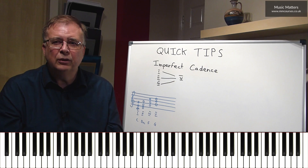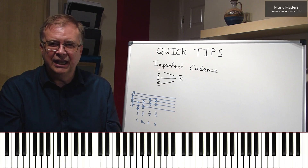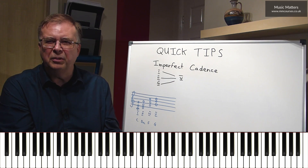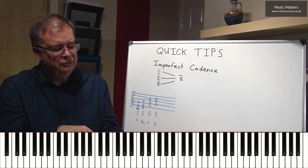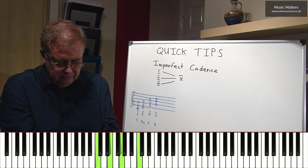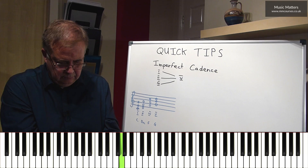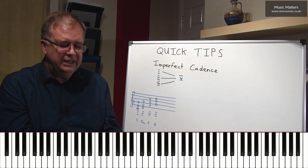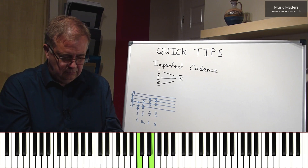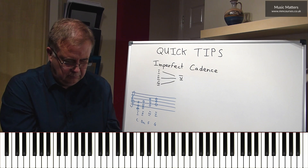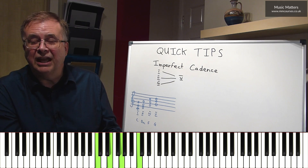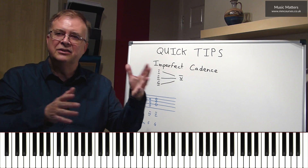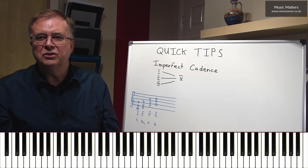Let me improvise a little phrase that finishes on an imperfect cadence, so you can hear what I mean about it being a kind of musical comma — we've come to the end of a phrase, but not to the end of the piece. [plays phrase] You see — that's a stopping point, but I now need to go on. [continues] And I've finished that second phrase with a perfect cadence. Can you see how the first one finishes on a musical comma, and the second one finishes on a musical full stop?